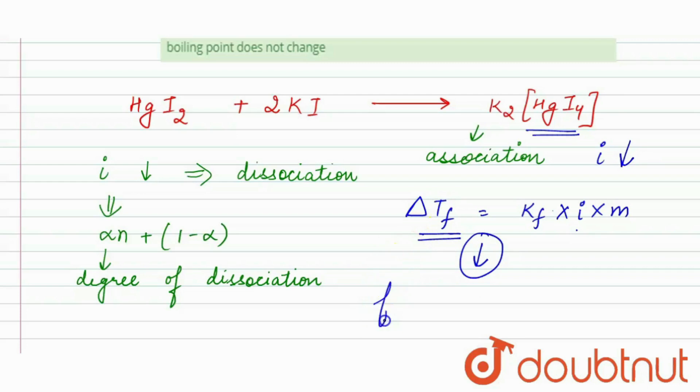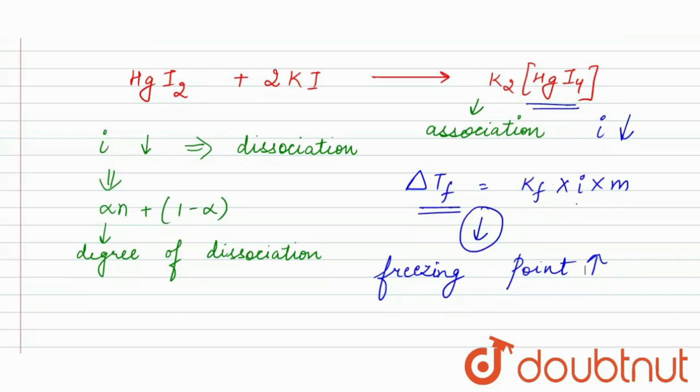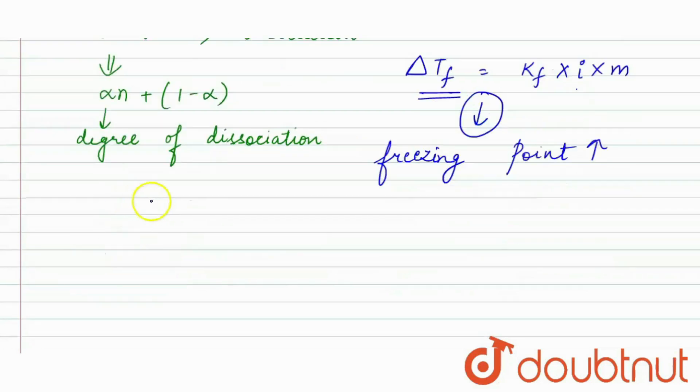So, if it is less, then the freezing point will be higher. Why? Because we know that the Tfs, that is freezing point of solution, is equal to Tf0 minus delta Tf. So, here if this factor is decreasing, then this factor will be raised. If this decreases, then this will be raised.